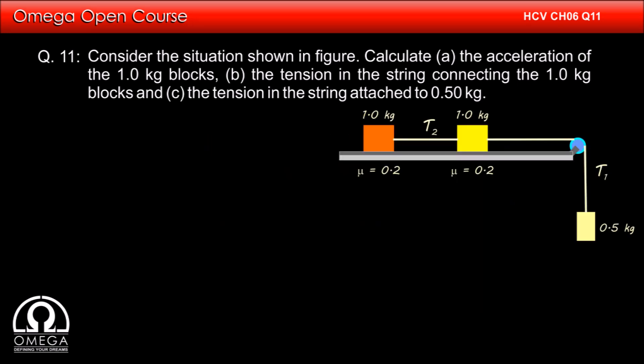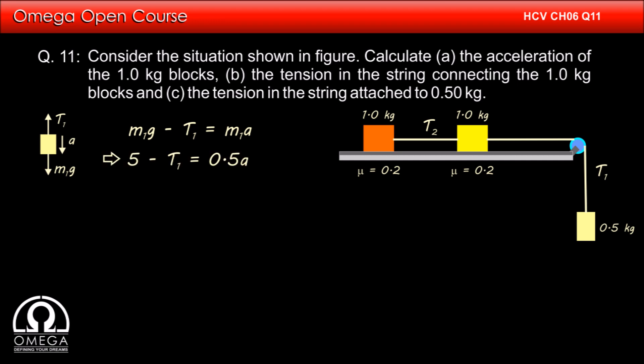Now let us draw the free body diagram of the 0.5 kg block. If we denote its mass by m1, then gravitational force m1g will pull the block downward. Tension T1 will pull it upward, and we assume acceleration a. By Newton's second law: m1g minus T1 equals m1a. Putting m1 = 0.5 and g = 10 m/s², we get: 5 minus T1 = 0.5a. (Equation 1)